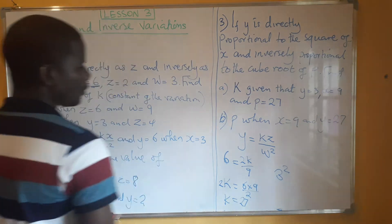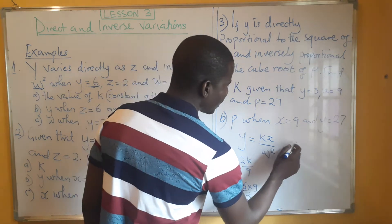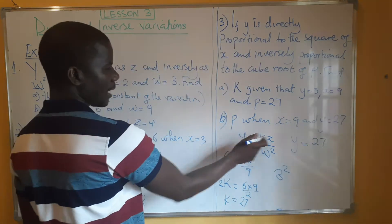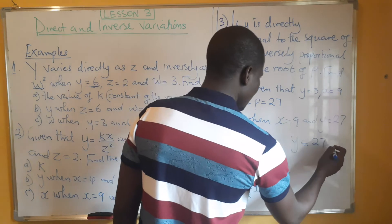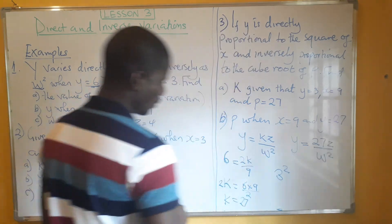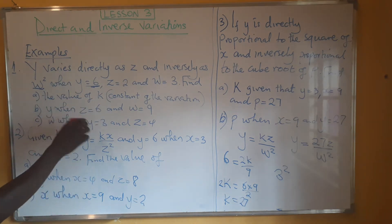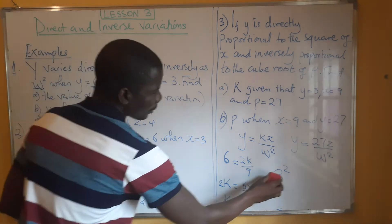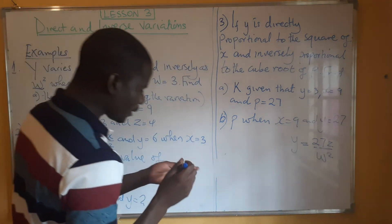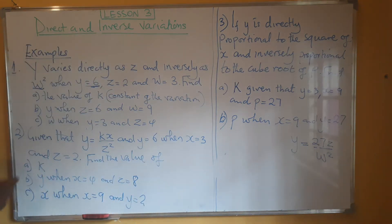So the equation we are going to be dealing with is Y equals 27Z over W squared — that is the value of K we have found, which is the constant. Even when they have not asked you to find the value of K, for you to solve these questions, you just need K, so you have to find it.